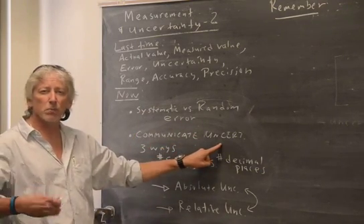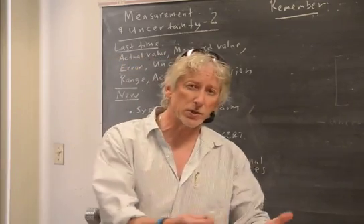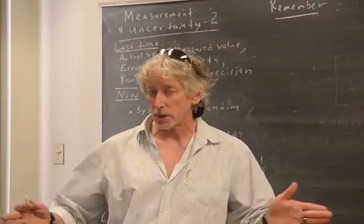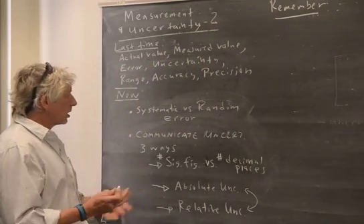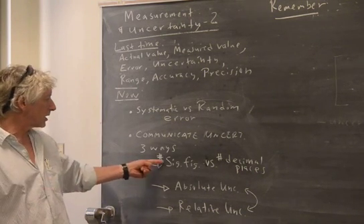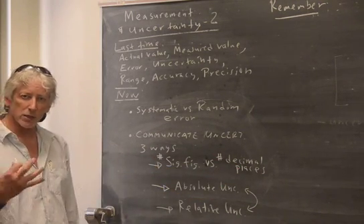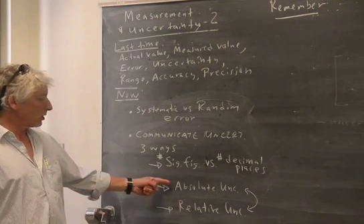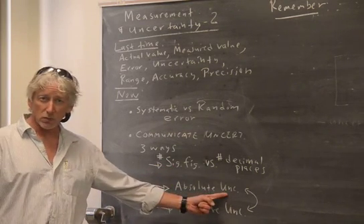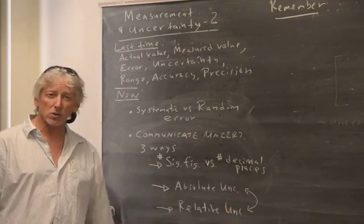We'll talk about how you specify or communicate the uncertainty. When you give someone a number and say, I got this number in the lab, they ask how good is it, how much can I trust it — it's not exact. There are three ways to communicate this. One way is just by writing the number; you'll see the number of significant figures and the number of decimal places. But in lab you can be more careful and specify the absolute uncertainty and the relative uncertainty, and you can go back and forth between these two fairly easily.